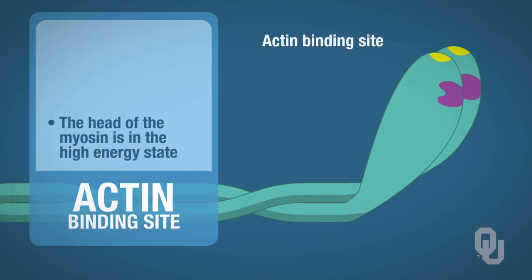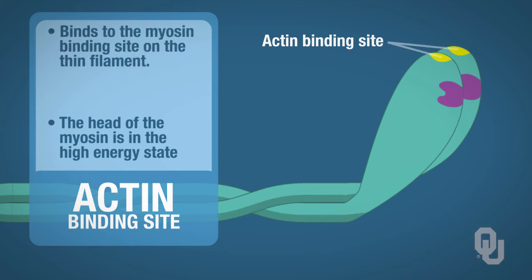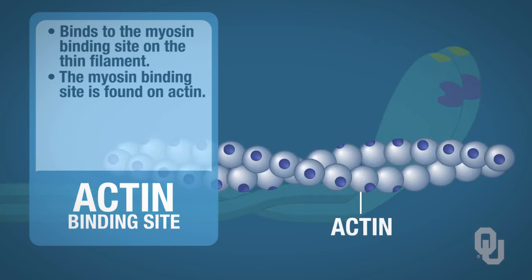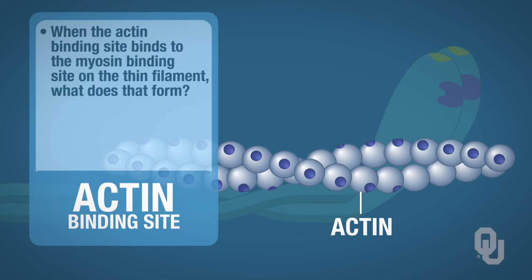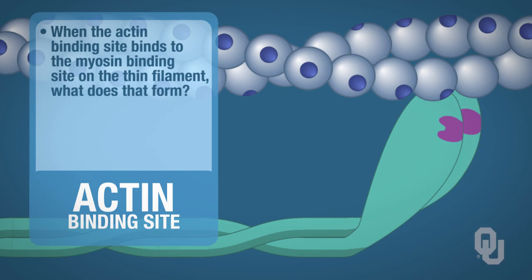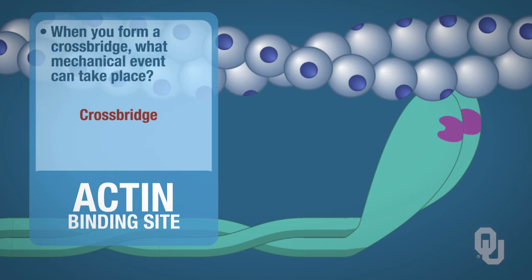Now let's focus on the actin binding site. The actin binding site is also located on each head, and the myosin binding site is found on the thin filament — specifically on actin, which is your green olive. So when the actin binding site binds to the myosin binding site on the thin filament, that forms a crossbridge. And when you form a crossbridge, contraction can take place.